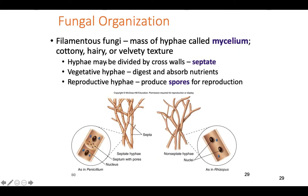The mycelium can be broken down into different types of how hyphae are put together, which is one of the ways fungi are classified. Hyphae can either have septums — division lines between cells — or not. Non-septate hyphae allow all the nuclei to float between one another freely. Septate hyphae have divisions that physically separate one cell from another. There are also vegetative hyphae specialized in digestion and absorption of nutrients, and reproductive hyphae that make spores.